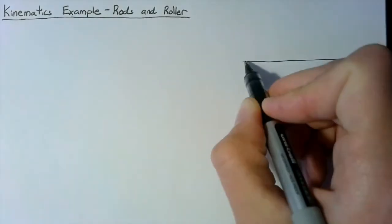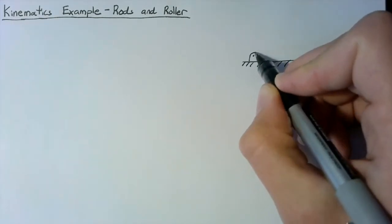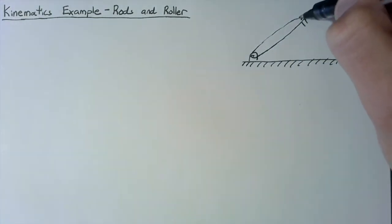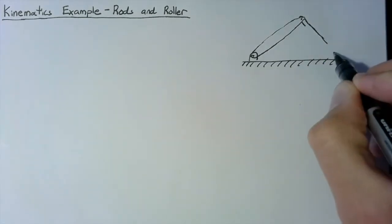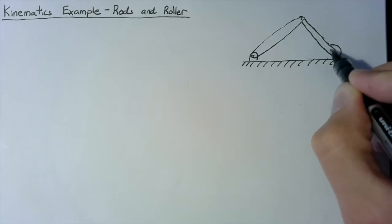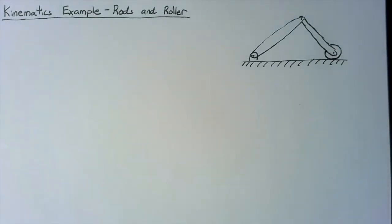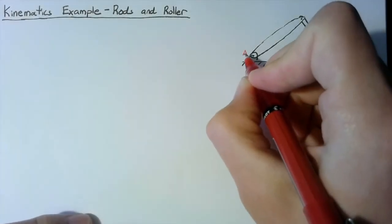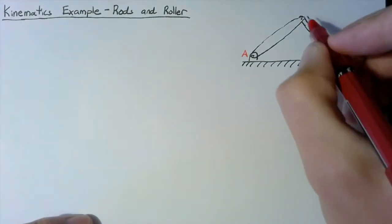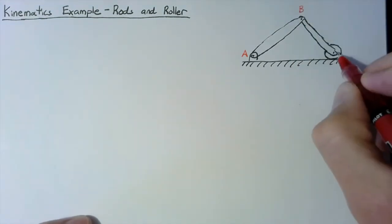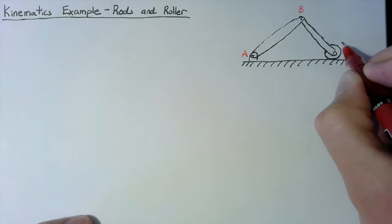Our situation here is that we have two rods connected together by a pinned joint. The other end of the first rod is connected to a stationary pin joint, and the end of the second rod is connected to a roller. We're going to identify three points of interest: end joint A, the connection of the two rods at B, and the center point of the roller, which we'll call C.